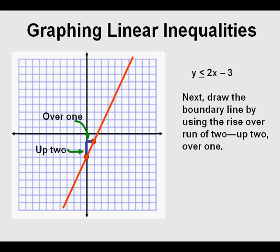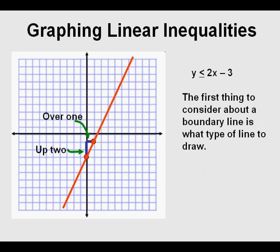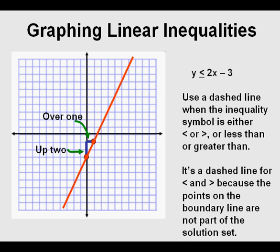We draw the boundary line using that rise over run. It's called a boundary line instead of a line of solutions because the line marks the boundary between the set of correct solutions and the non-solutions. The first thing to consider is what type of line to draw — solid or dashed. We use a dashed line when the inequality symbol is less than or greater than, meaning it doesn't have that little line underneath it, because the points on the boundary line are not part of the solution set.